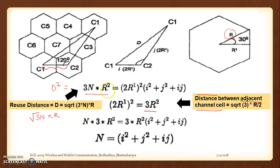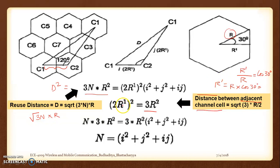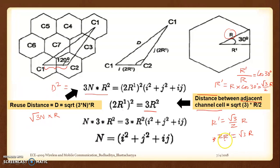The objective is to relate r with respect to r1. Using the triangular rule, we find r1/r = cos(30°), so r′ = r · cos(30°) = (√3/2) · r. Therefore, 2r′ = √3 · r. Taking the whole square: (2r′)² = 3r². This is where we get this particular equation. Substituting everything, terms cancel out — 3 cancels out — and we are left with n = i² + ij + j².